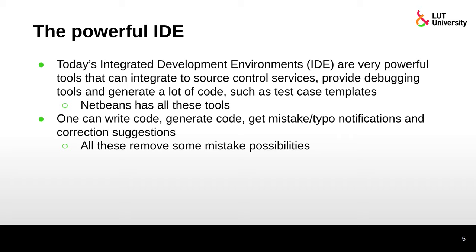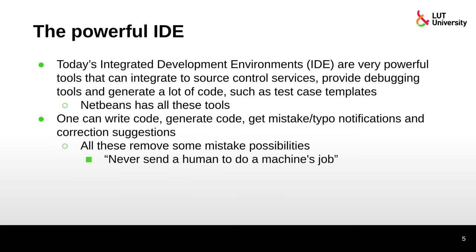All these mentioned features are there to remove possibilities for mistakes. If there is a chance you might make a typo, it's good to have a system that checks what you are writing and says this is probably a typo — would you like to fix it? As was said in The Matrix, never send a human to do a machine's job. Computers are good at certain jobs, so let them do that job.